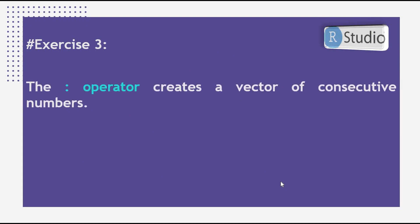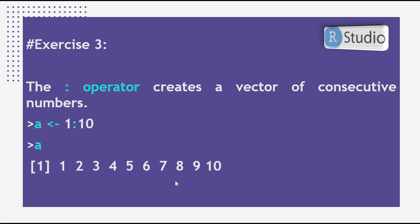In Exercise 3, we use the colon operator to create a vector of consecutive numbers. If you want a vector containing numbers from 1 to 10, instead of writing 1, 2, 3, 4, 5 through 10, you write 1:10 and assign it to a. When you print a, you get numbers from 1 to 10.